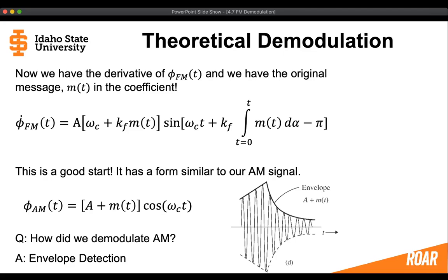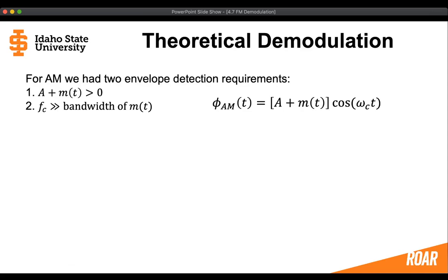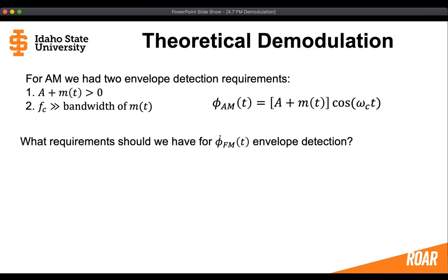When we got the envelope, we could do some other things to recover the message. So we should be able to do that now with our frequency modulated signal. For amplitude modulation, there were two requirements that had to be met to make sure that envelope detection actually worked. We needed the constant A added to the message to be greater than zero for all values of time, and we also needed the carrier frequency to be much higher than the bandwidth of the message. So what requirements should we have for the derivative of the FM signal if we want to apply envelope detection?